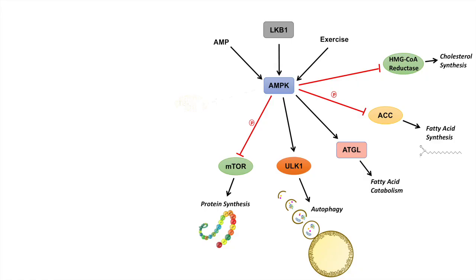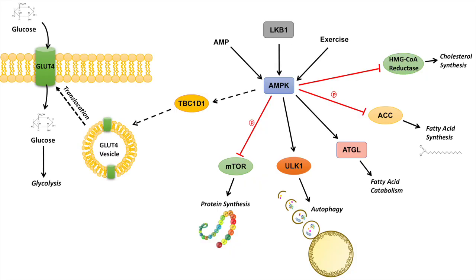AMPK also activates glucose uptake through GLUT4 transporters via a process involving TBC1D1. This is another way that an insulin-sensitive cell can take up glucose independently of insulin signaling — through an AMPK-dependent pathway. This is exactly what happens during exercise: exercise activates AMPK, which increases glucose uptake through GLUT4 translocation, leading to increased glucose uptake and glycolysis.